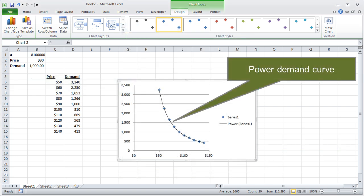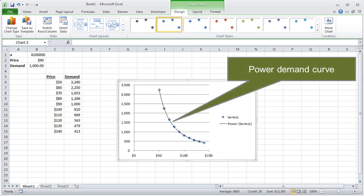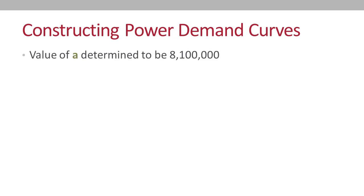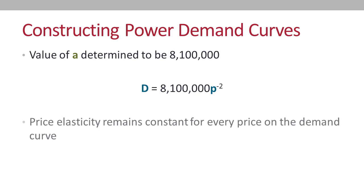Excel will draw the power demand curve on our chart. Now that we have the correct value for A, we can plug it back into our formula for the power demand curve, and for any price on the curve described by this formula, the price elasticity of demand remains constant at 2.